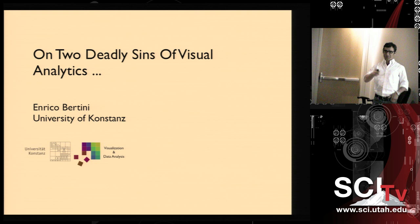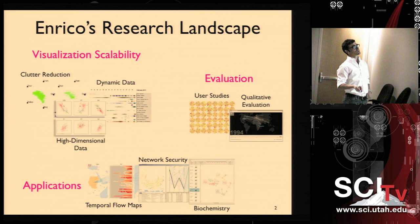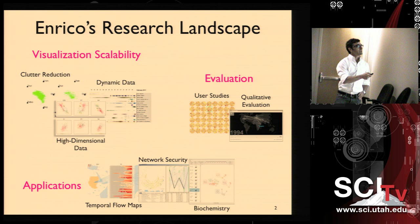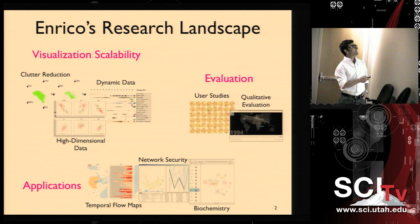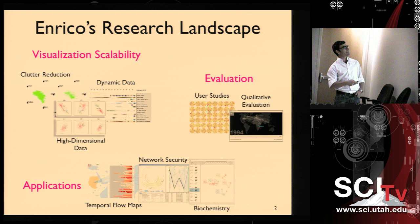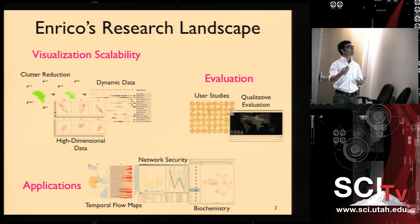I will start by giving a very broad overview of my research, what I've been doing in the past. Basically my research is around three main islands. The first one is visualization scalability, where I try to make visualization more scalable according to different factors. The first is reducing clutter in information visualization when you have too many objects to represent on the screen - we have sampling techniques and ways to measure clutter.